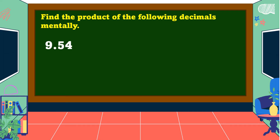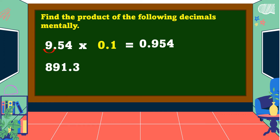Nine and fifty-four-hundredths times one-tenth. In multiplying a decimal by one-tenth, move the decimal point one place value going to the left. So the answer is equal to nine-hundred-fifty-four-thousandths.